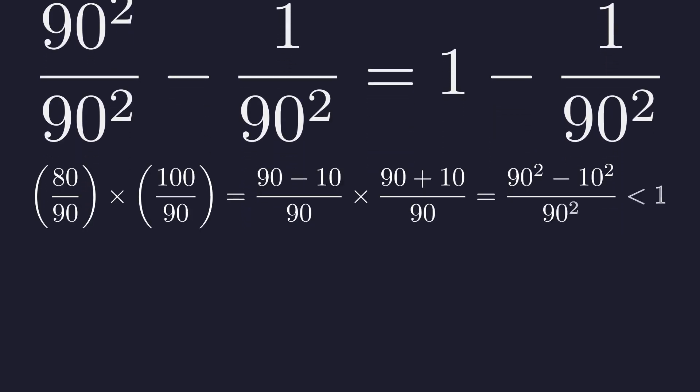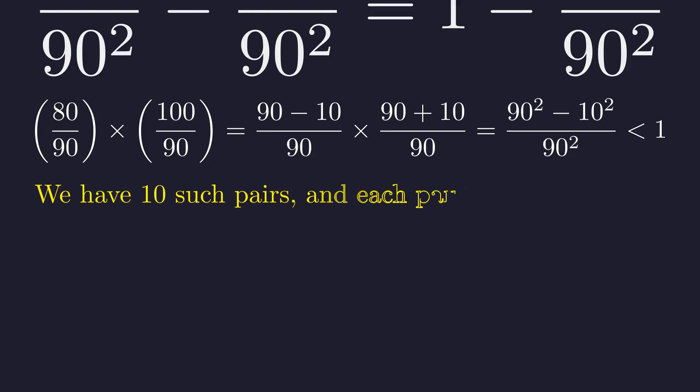This pattern holds for all symmetric pairs. For example, the product of 80/90 and 100/90 simplifies to 1 minus 100 over 90 squared, still less than 1. We can form 10 such pairs from 80 and 100 down to 89 and 91. The product of every single one of these pairs is less than 1.